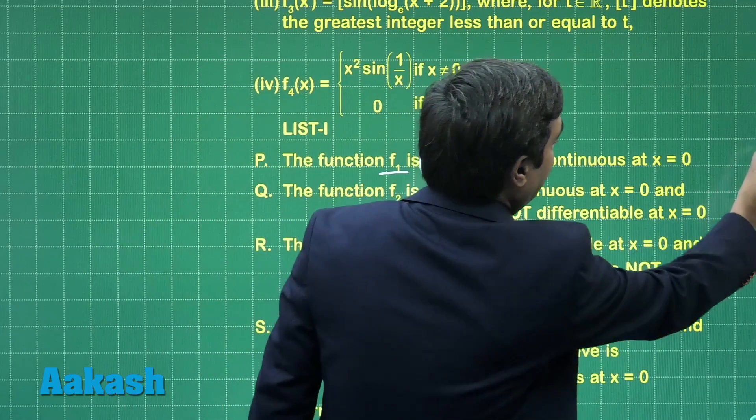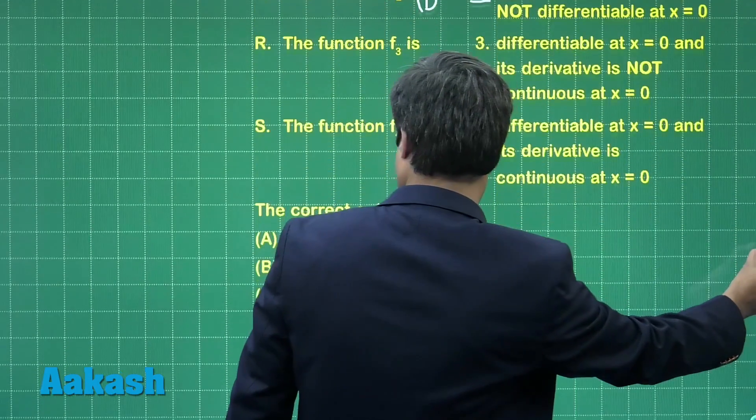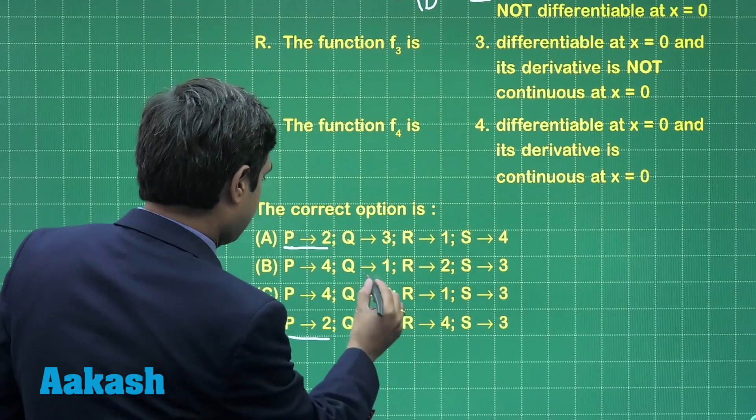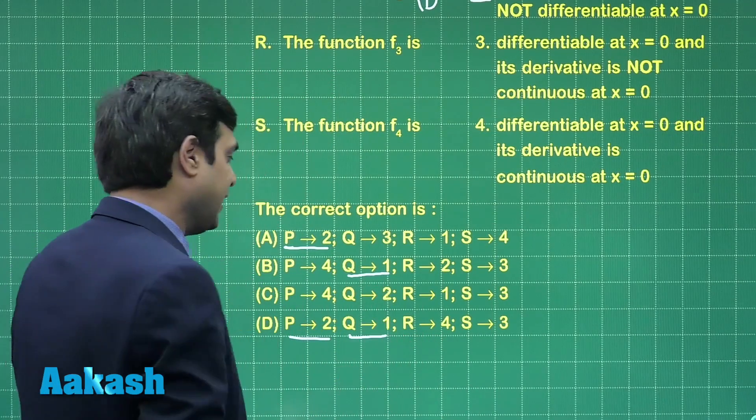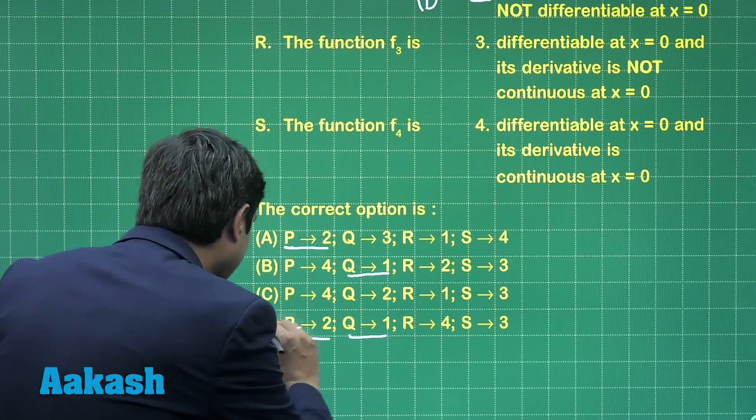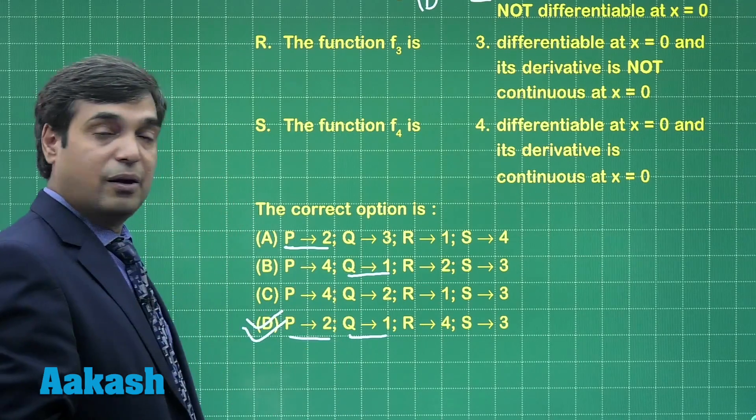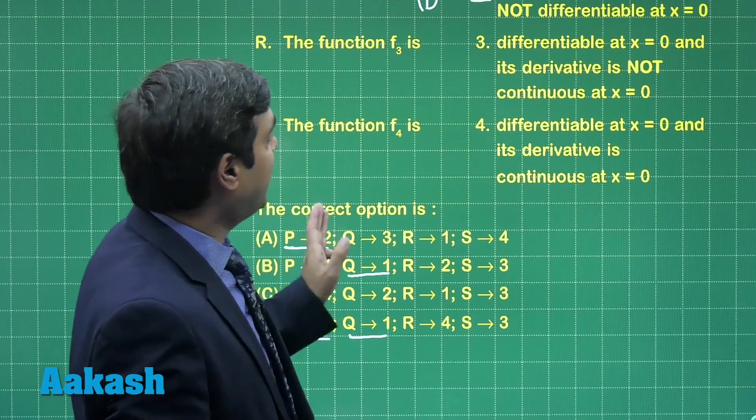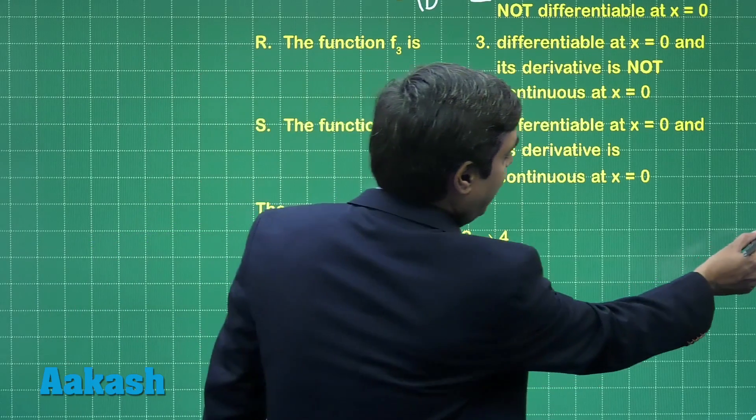Look at the codes again. This gives us possibility b and d. Clearly the correct answer is d. We can also check function f3 and f4 for differentiability and continuity.